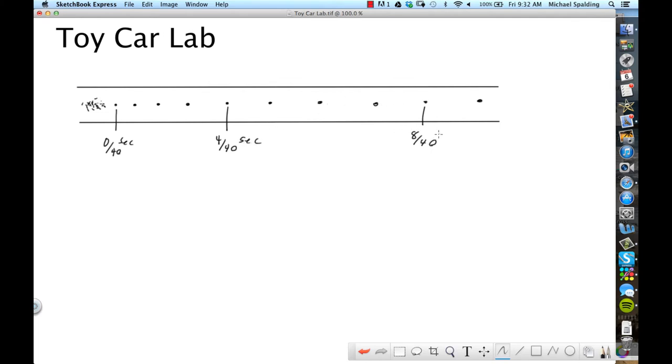Now the first thing that the lab asks you to do is to make a data table of position and time. So your data table will go like this. And you're going to do this in your graph paper comp book for homework, the homework one. So time in seconds, this is number one on the lab. I'm just going to get you guys started. Time and position.